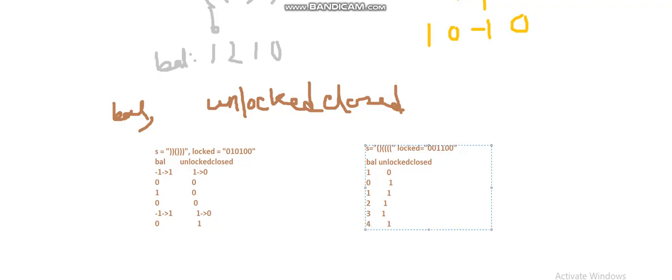If the value of balance is greater than zero after the loop where we are calculating balance and unlock_close, we will traverse from the end and check if we can change some open parentheses to close parentheses to make the value of balance zero.